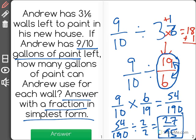Twenty-seven and ninety-five do not share any common factors apart from one, so that is the correct answer. Twenty-seven ninety-fifths gallons of paint could go on each of the walls left in Andrew's house.